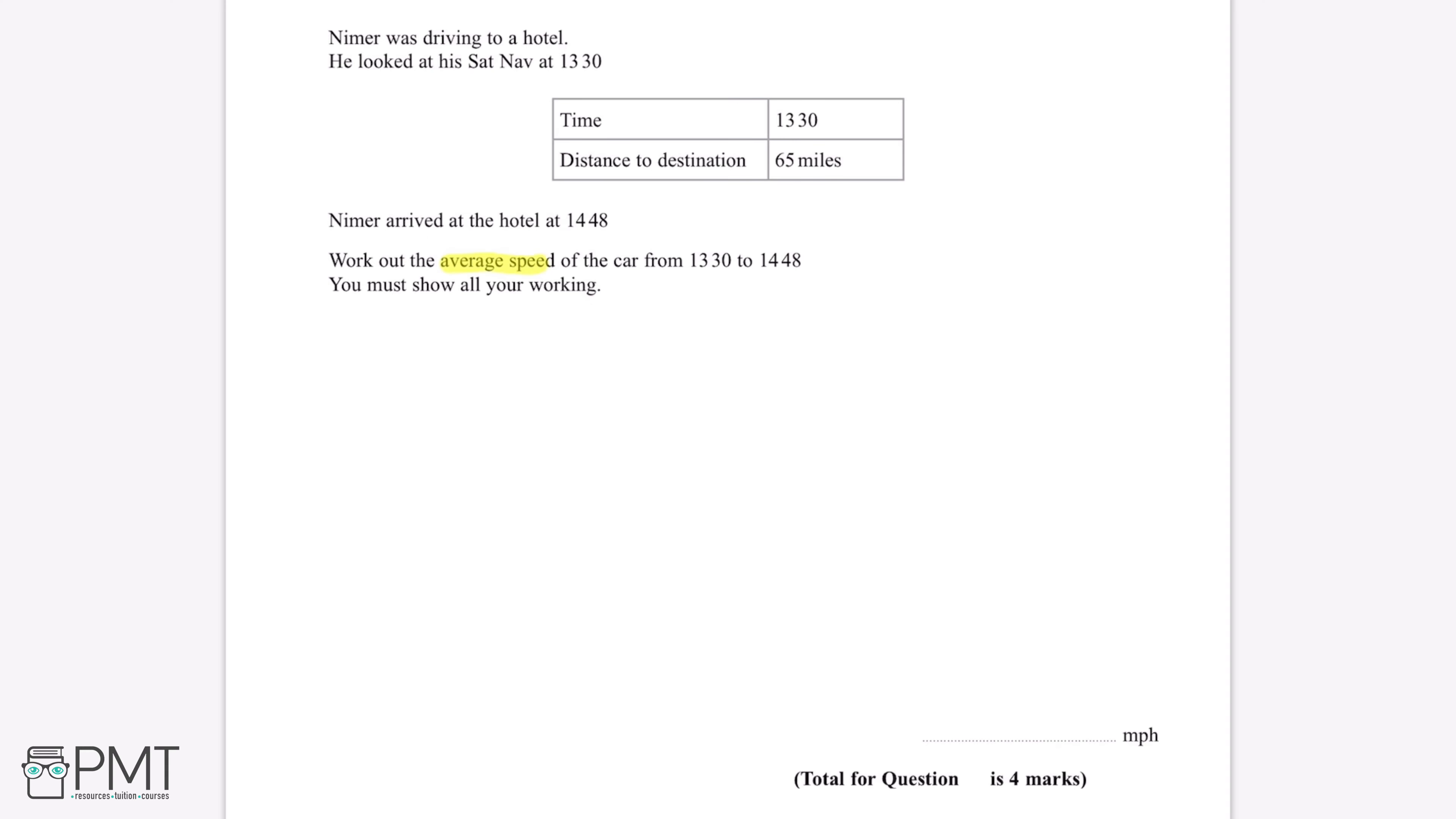In order to work out the average speed of the car, there are two pieces of information we'll need to know. We'll need to know the distance travelled and the time taken to travel that distance.